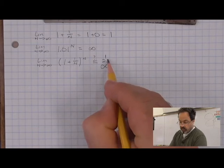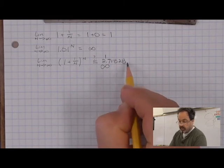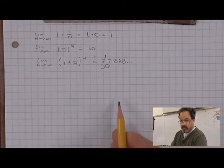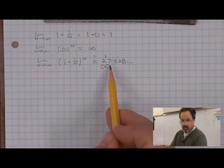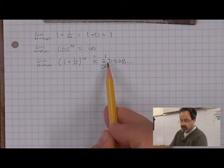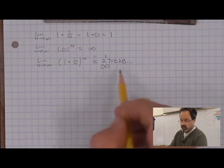And that number is 2.71828 approximately. Because the number that this limit converges upon is irrational. It can't be written down exactly as a decimal or a fraction. So it goes on and on.